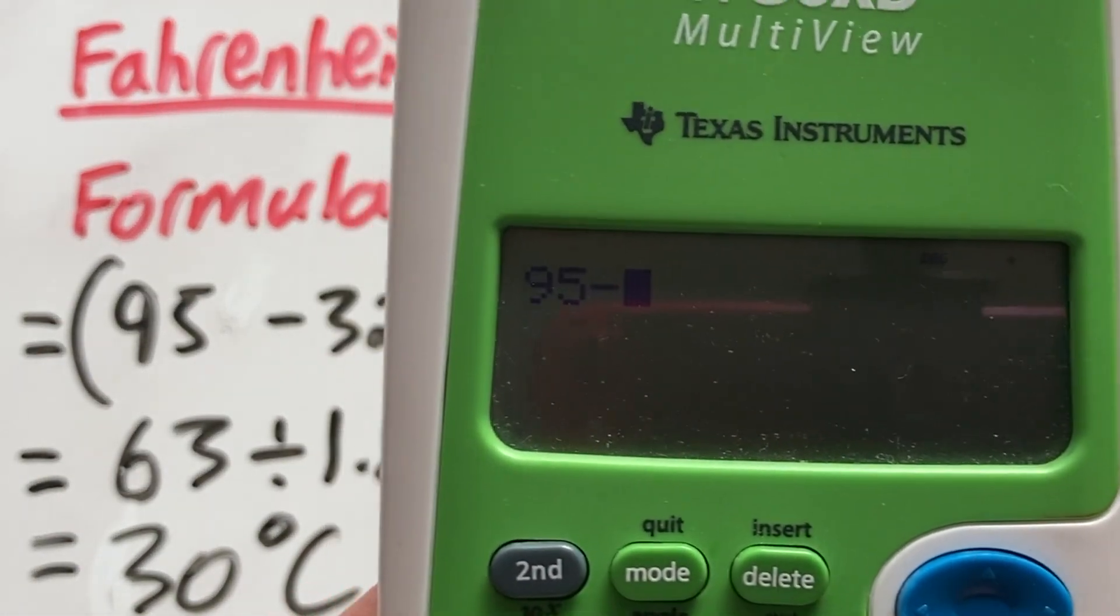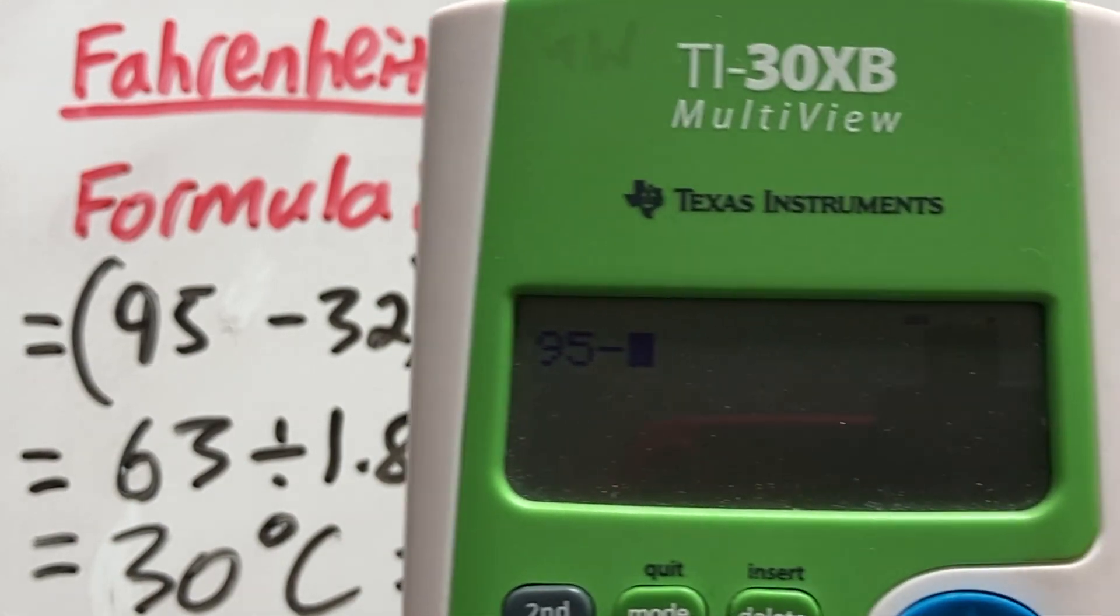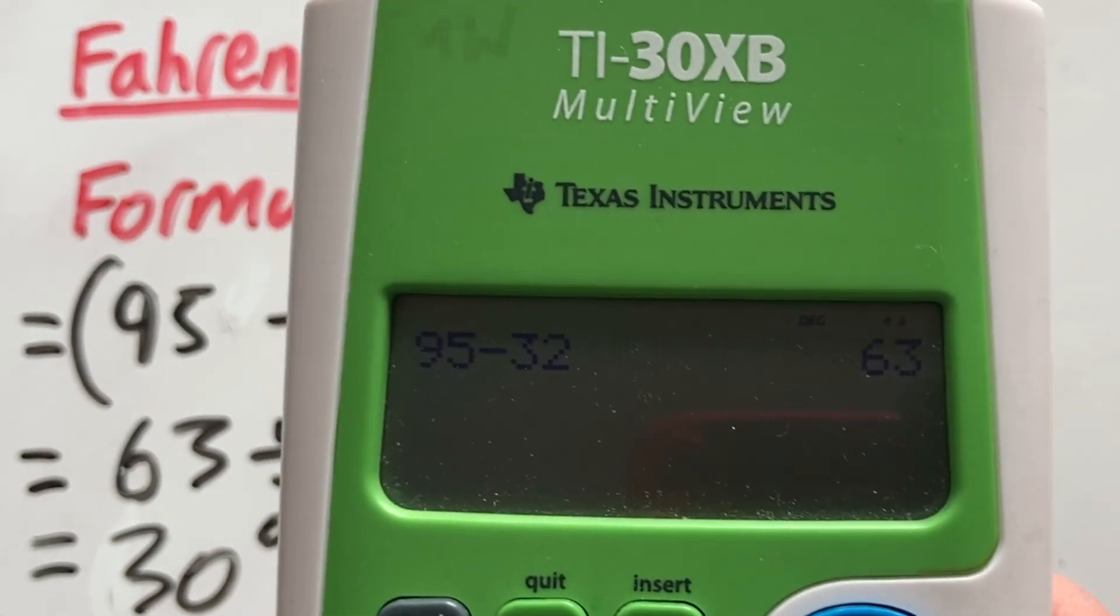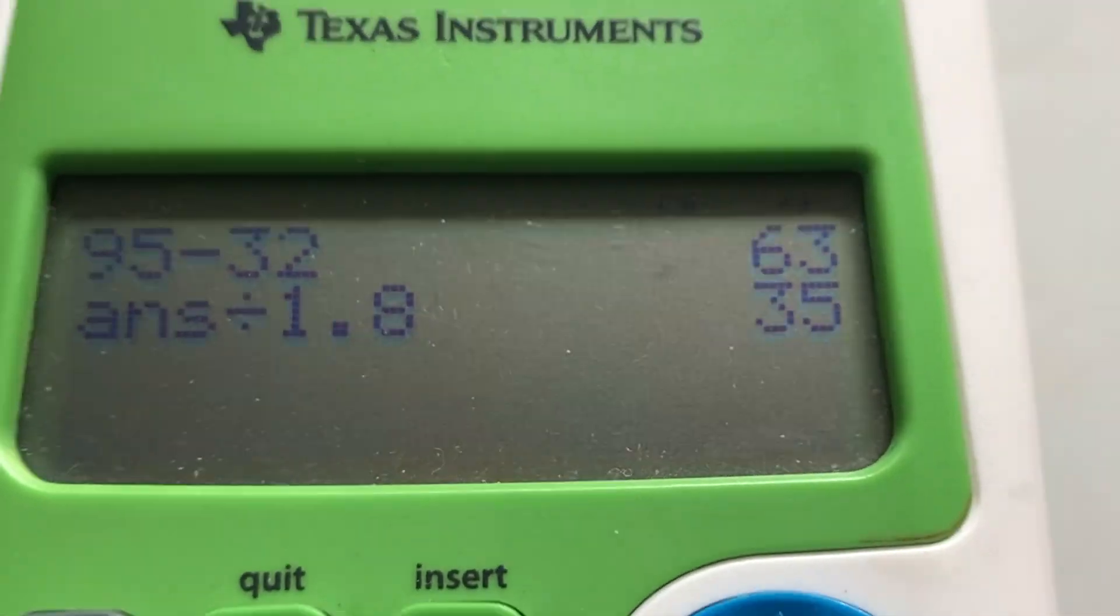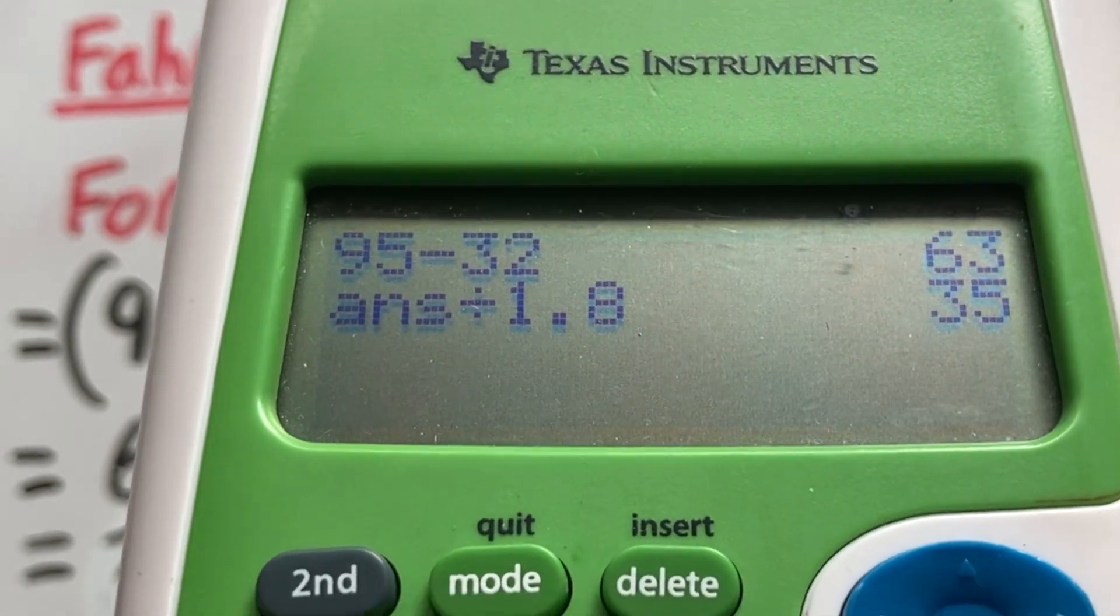So I'll just show you that here. We have our 95, which is what we're converting. And we have to do minus that 32. So that gives us 63. And just divide that by 1.8. And that gives us our Celsius value to be 35.